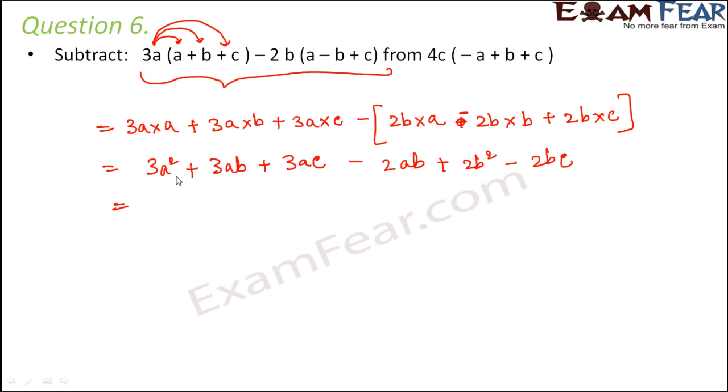Now let us bring the like terms together. So 3a² + 2b² plus all the terms with ab: 3ab - 2ab, this would be equal to plus 1ab. Terms with ac: there is just one term, 3ac. Similarly, there is just one term with bc. So this is the simplified form of this term.